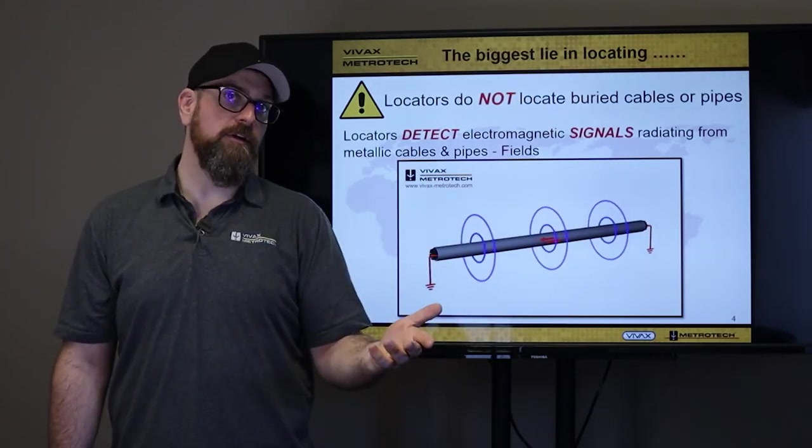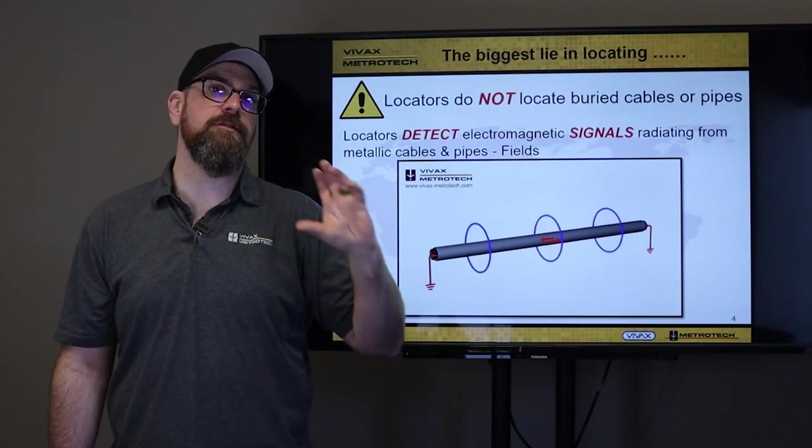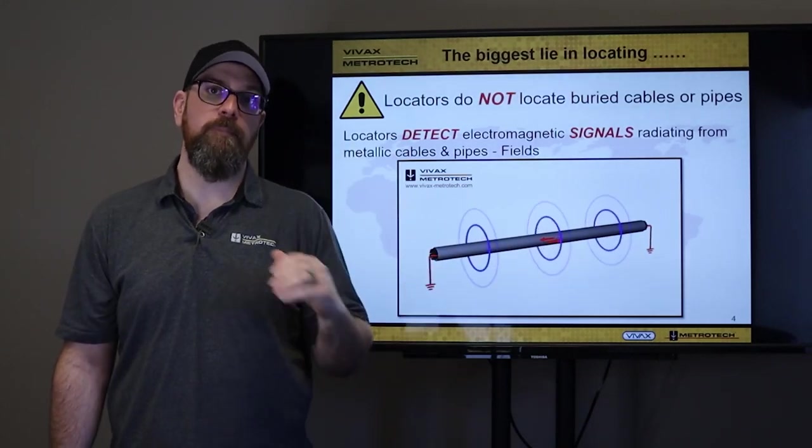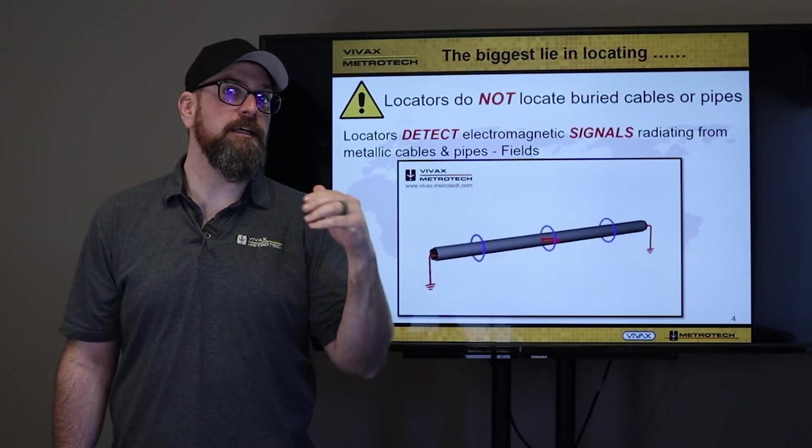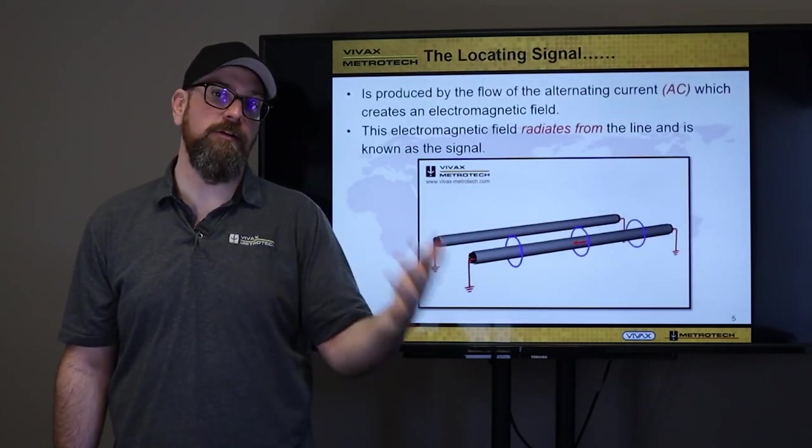So, with our V-Lock 3 Pro, we can see that actual whole tube. But, keep in mind, electromagnetic field, if you don't have that, you're not doing a locate.